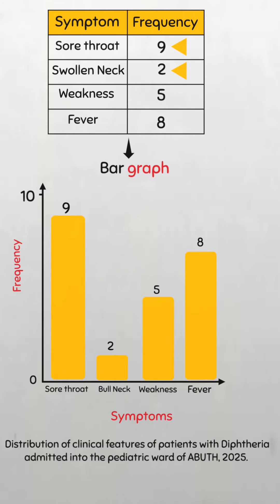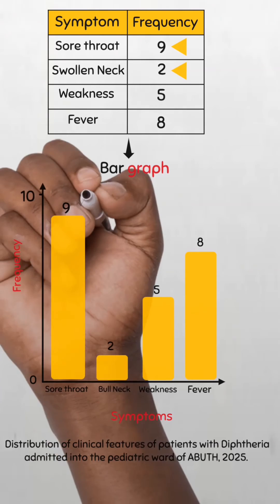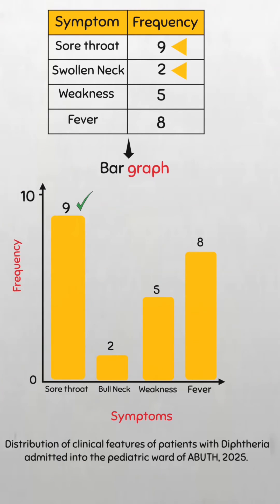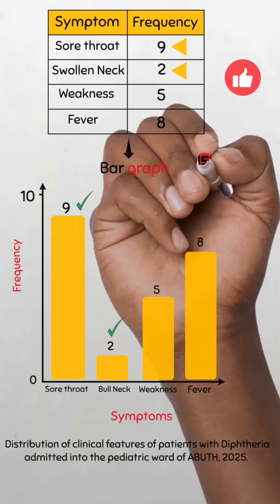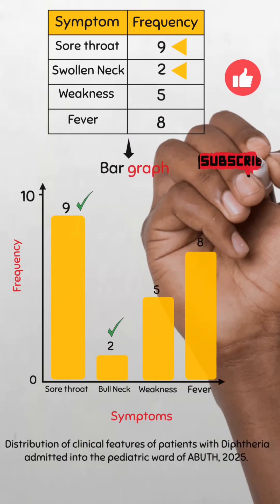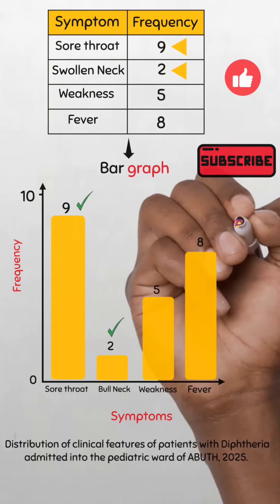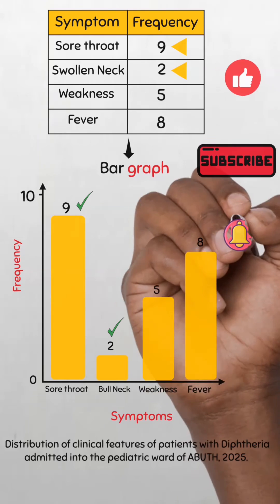Now we have a bar chart and we can visually compare the values of the data. We see clearly that the most common symptom was sore throat while the least common was bull neck. Easy peasy. Check out the full video on my channel and don't forget to like, share and follow for more.